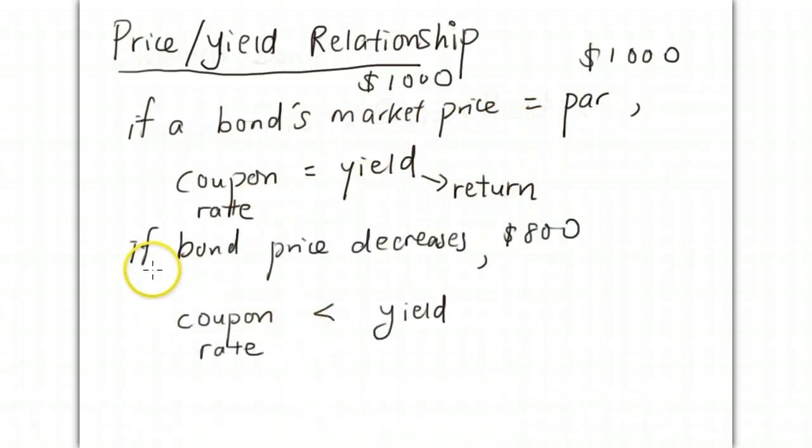However, if the bond price decreases to $800, the coupon rate is less than the yield. I can buy a bond at $800 and get back $1,000 at maturity, meaning my yield will be higher than if my current bond price were $1,000.